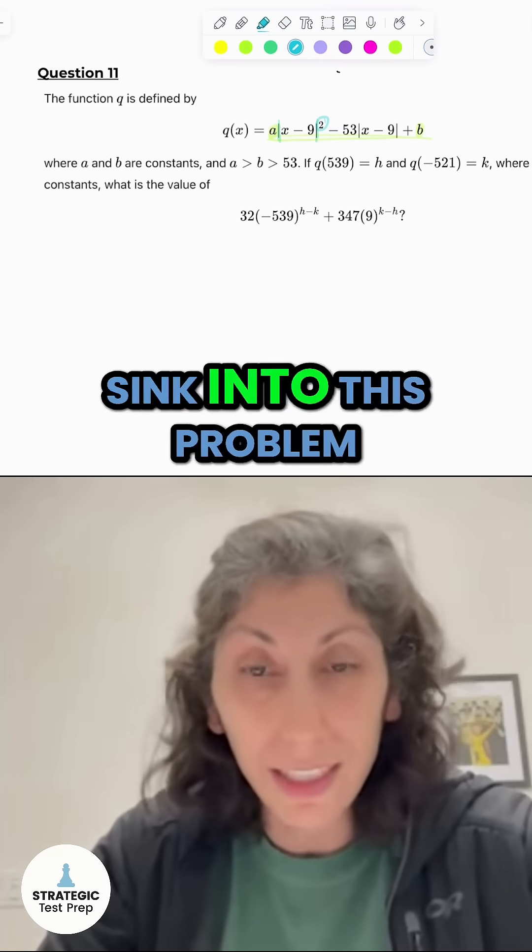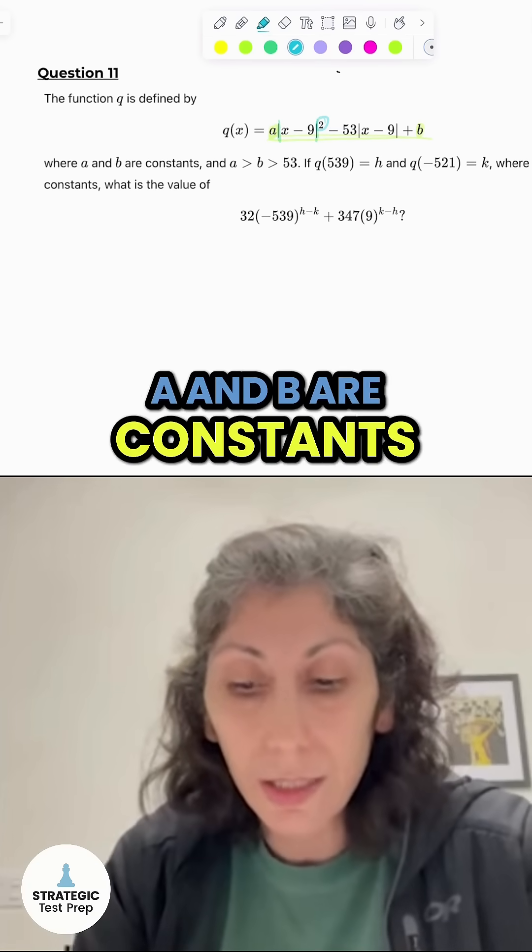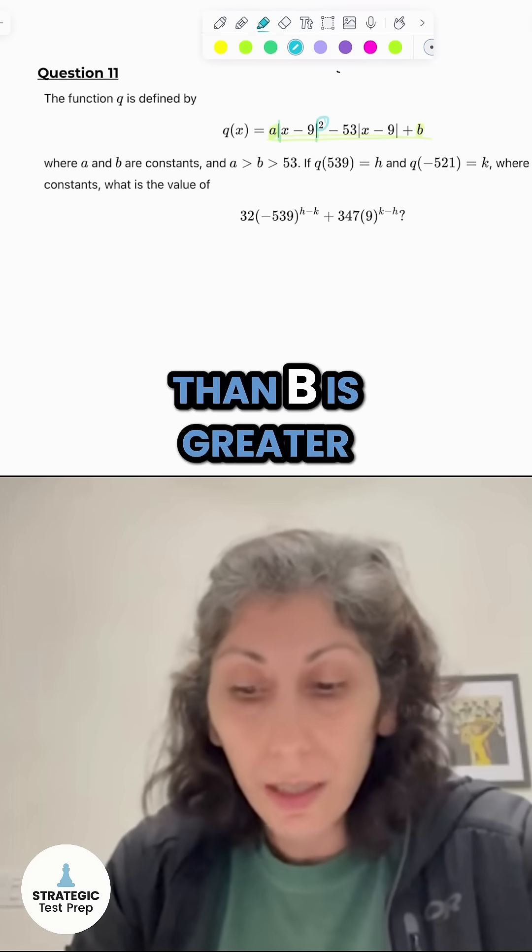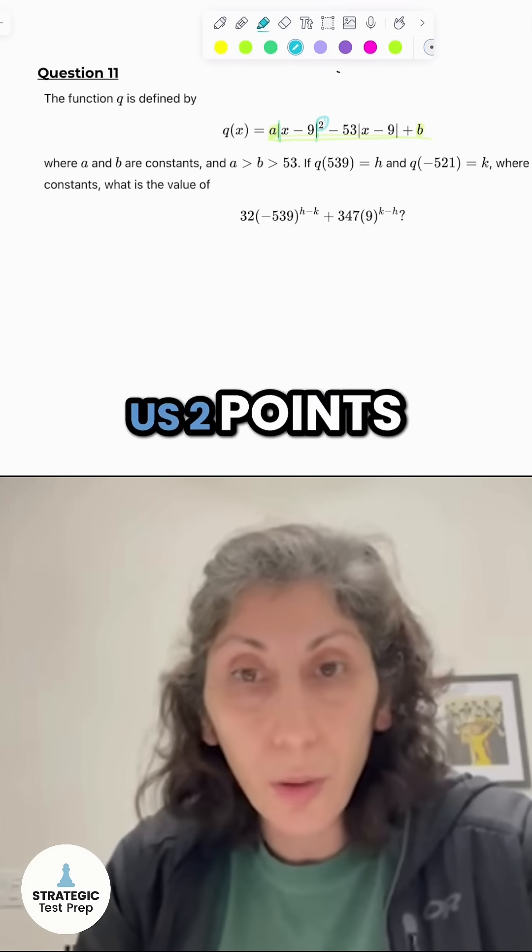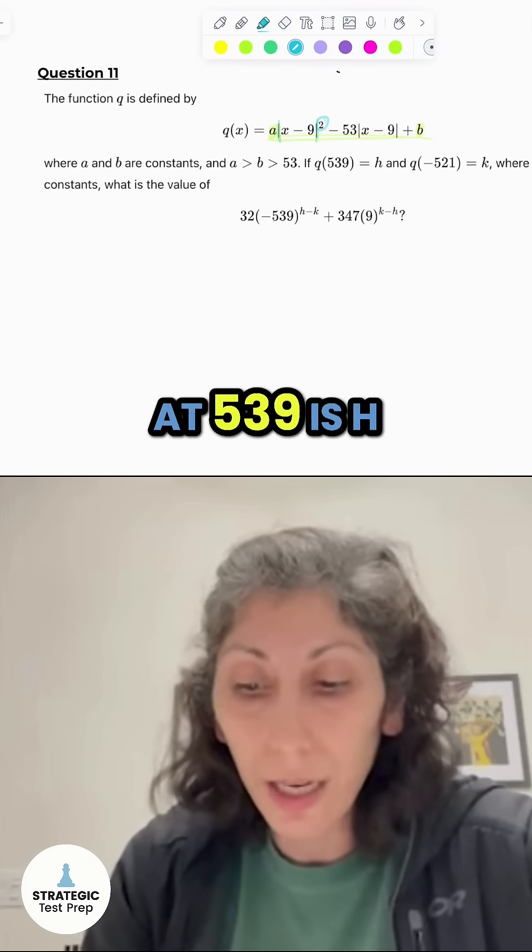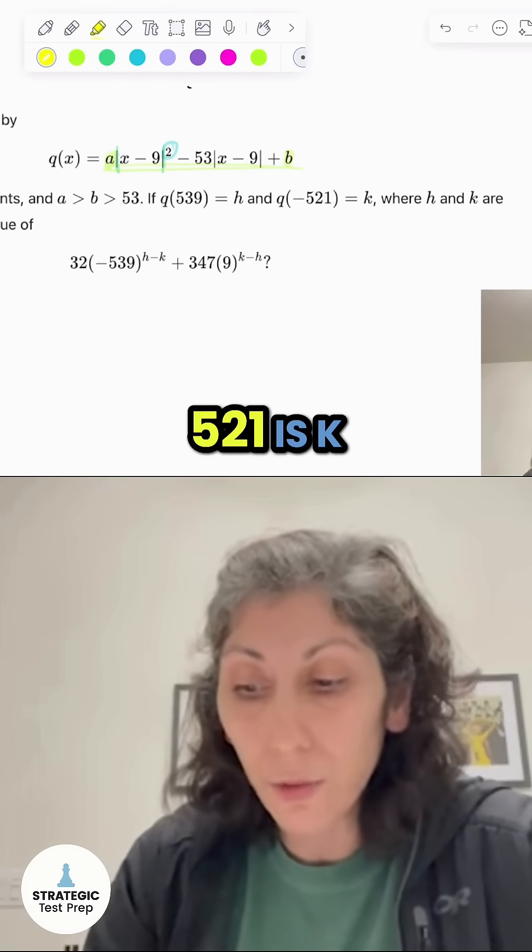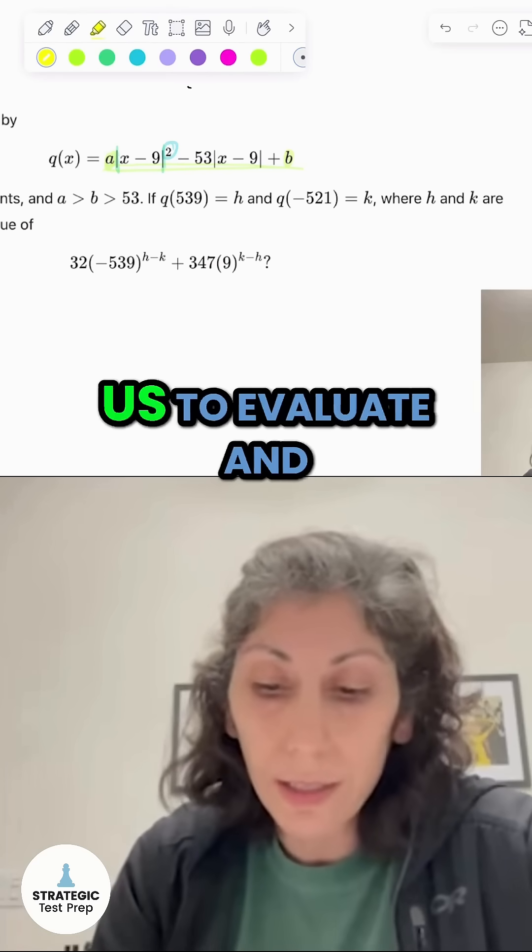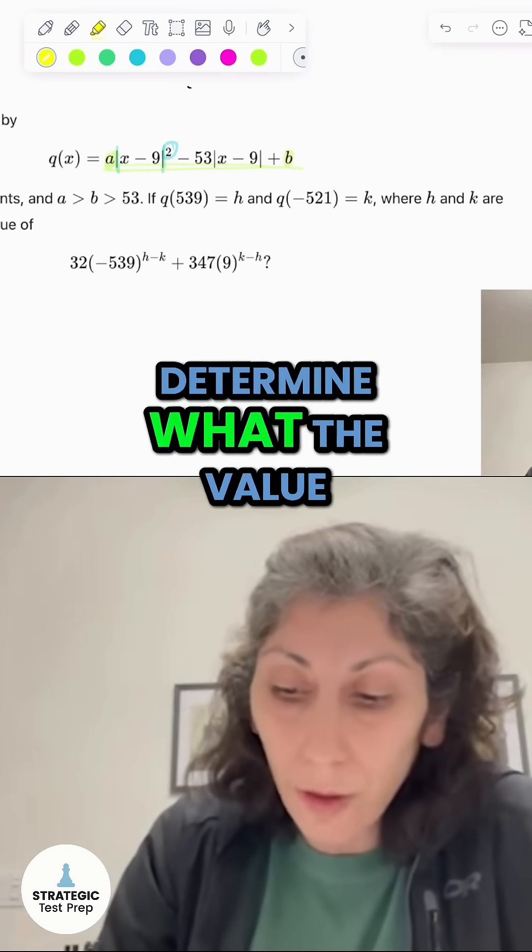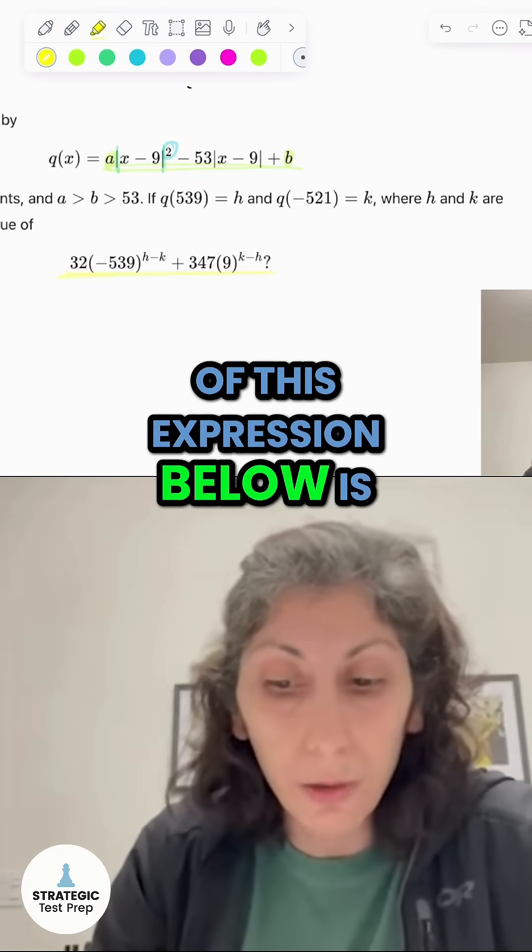They tell us that A and B are constants where A is greater than B is greater than 53. And then they give us two points. They tell us Q at 539 is H and Q at negative 521 is K, where H and K are constants. And then they want us to evaluate and determine what the value of this expression below is.